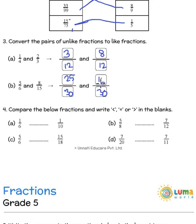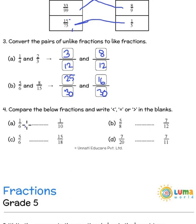The next one is to compare the fractions below and write whether it is less than, equal to, or greater than in the blanks. There are two ways of doing it: you can take the LCM, turn them into like fractions and then compare, or you could cross multiply and see which is greater. For 6 and 10 the LCM would be 30. This becomes 5 by 30 and this would become 3 by 30.